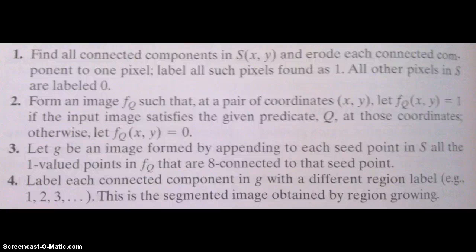One thing to start with: it's assumed that the original image f and the seed array s(x,y) are the same size. This is a basic region growing algorithm. Step one: find all the connected components of the seed array and erode each component to one pixel. As stated above, wherever it's labeled one, that's where the seeds are, and everywhere else is labeled zero.